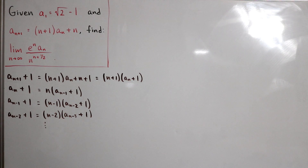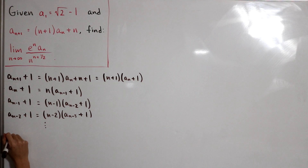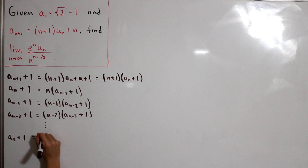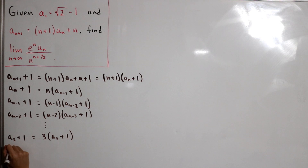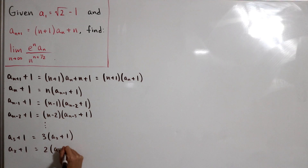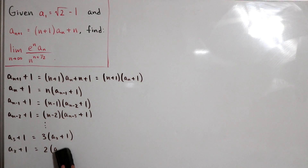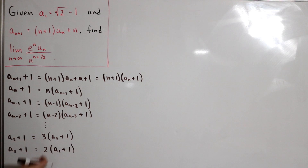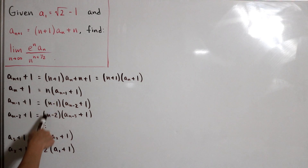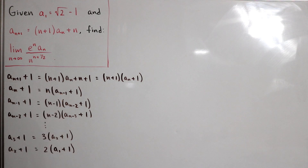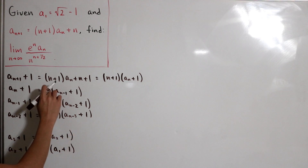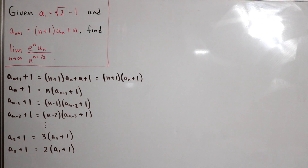Suppose we go to the final two terms for a sub 3 and a sub 2 — we already have a sub 1 as given. Then a sub 3 plus 1 equals 3 times a sub 2 plus 1, and a sub 2 plus 1 equals 2 times a sub 1 plus 1. Notice everything is decreasing — it's nested when you plug in each term of the sequence. So 3·(2·a sub 1 + 1) + 1 — this is actually forming factorials as we decrease each term by 1 and find their product.